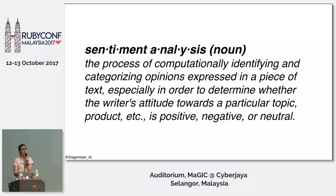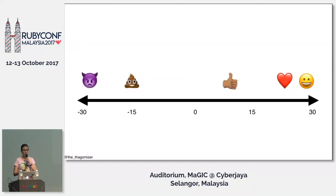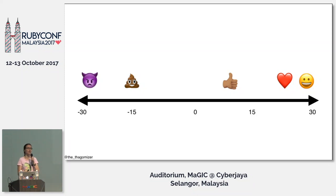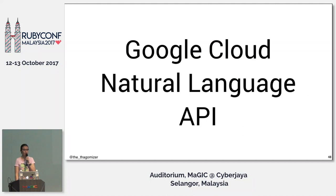I decided to use emoji because sentiment analysis is really hard — so I made a scale. On one end you have the purple angry emoji at negative 30, then there's the poop emoji at negative 15, and the smiley face is positive 30. I used emoji because it's much easier than actually doing it. But since I gave that talk, we've gotten access to better tools. I work at Google and we released the Natural Language API.